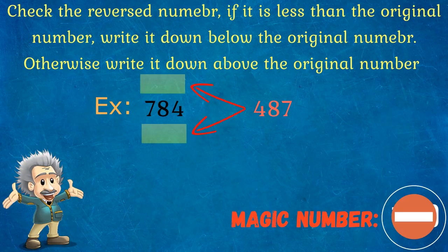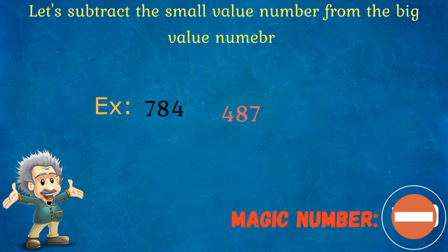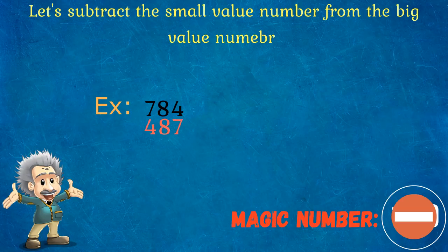In this example, 487 has to be written below the original number. Then, subtract the below number from the above number. In this example, result is 297.